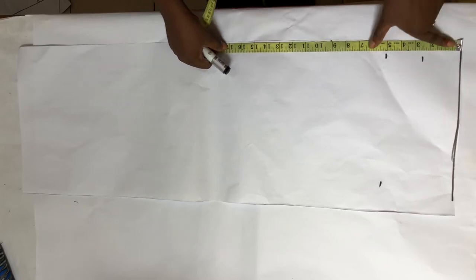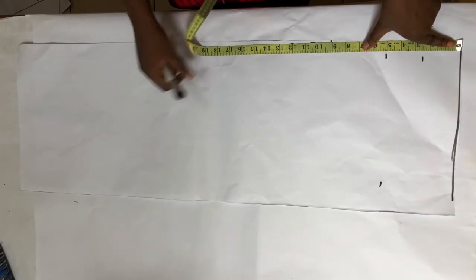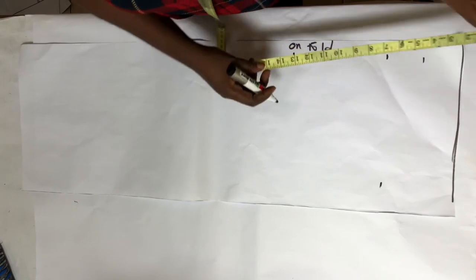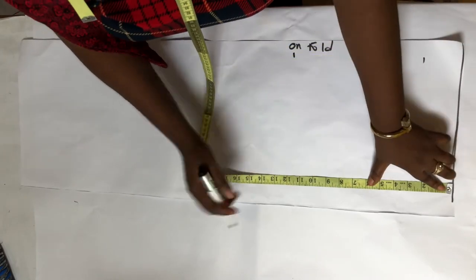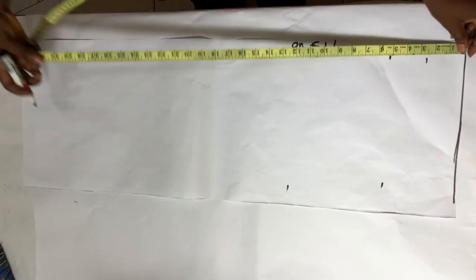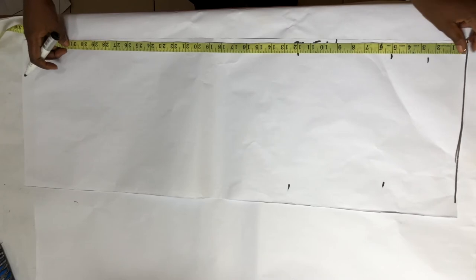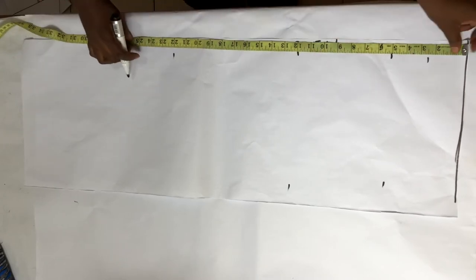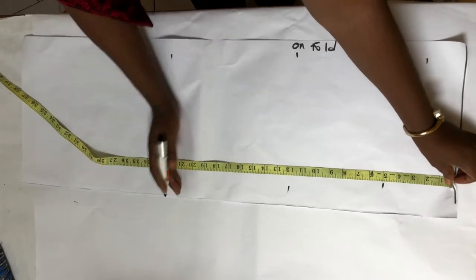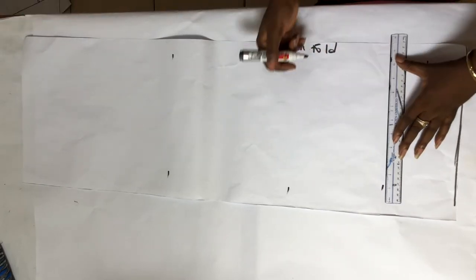From the line I'm going to measure my elbow length, that is 12 inches. Lastly I'm going to get my sleeve length for the long sleeve, that is 22 inches. I'm going to connect my lines now.